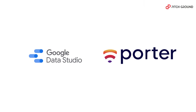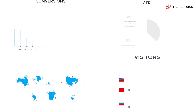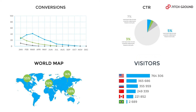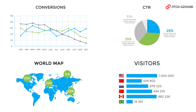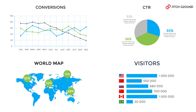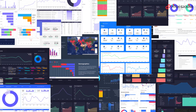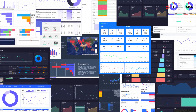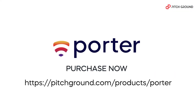Porter. With Google Data Studio and Porter, you can automatically track main KPIs and metrics in a flexible and friendly way. On top of that, you can use dozens of ready templates for your data. Automate your reporting and centralize your marketing data on Google Data Studio — all in seconds with Porter.